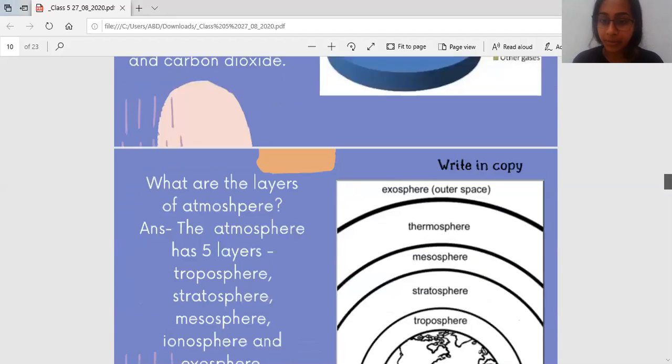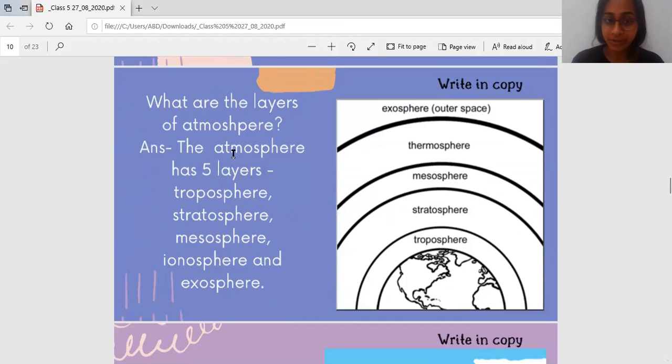Now, wherever you see write in copy, please write that in copy. What are the layers of atmosphere? What does the layers mean? The atmosphere has a lot of layers. So, this is Earth. If you see the picture, this is Earth. We call it different layers. The first layer is called Troposphere. After that, we call it Stratosphere. After that comes Mesosphere. After that comes Thermosphere. And the last layer is called Exosphere, which is the outer space.